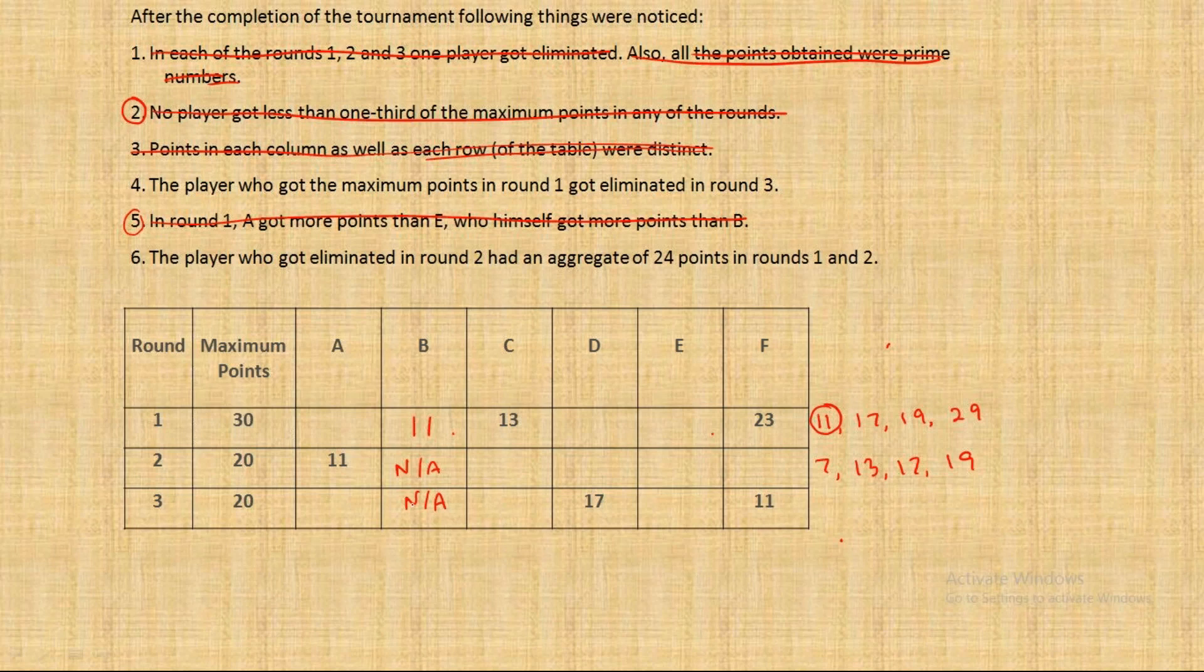Now 11 is also gone. So among A, D and E, one will get 17. But A cannot get 17 points because A got more points than E. D cannot get 17 points because D gets 17 points in the third round, which makes E as the person who gets 17 points in the first round.